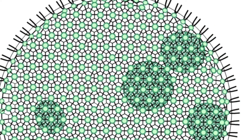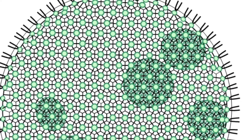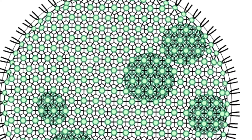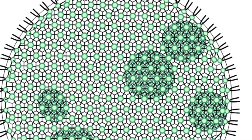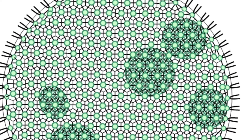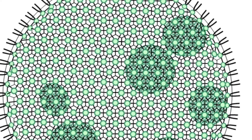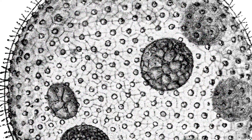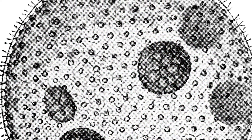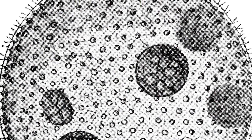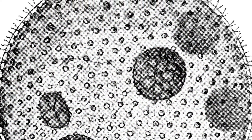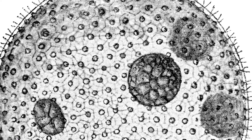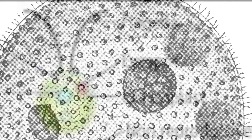Volvox is a green algae which exists as a grand spherical colony. Each algae has two whip-like tails called flagella that use a propeller-like motion. The algae are connected to each other by cytoplasm, so the flagella are used in an organized manner.